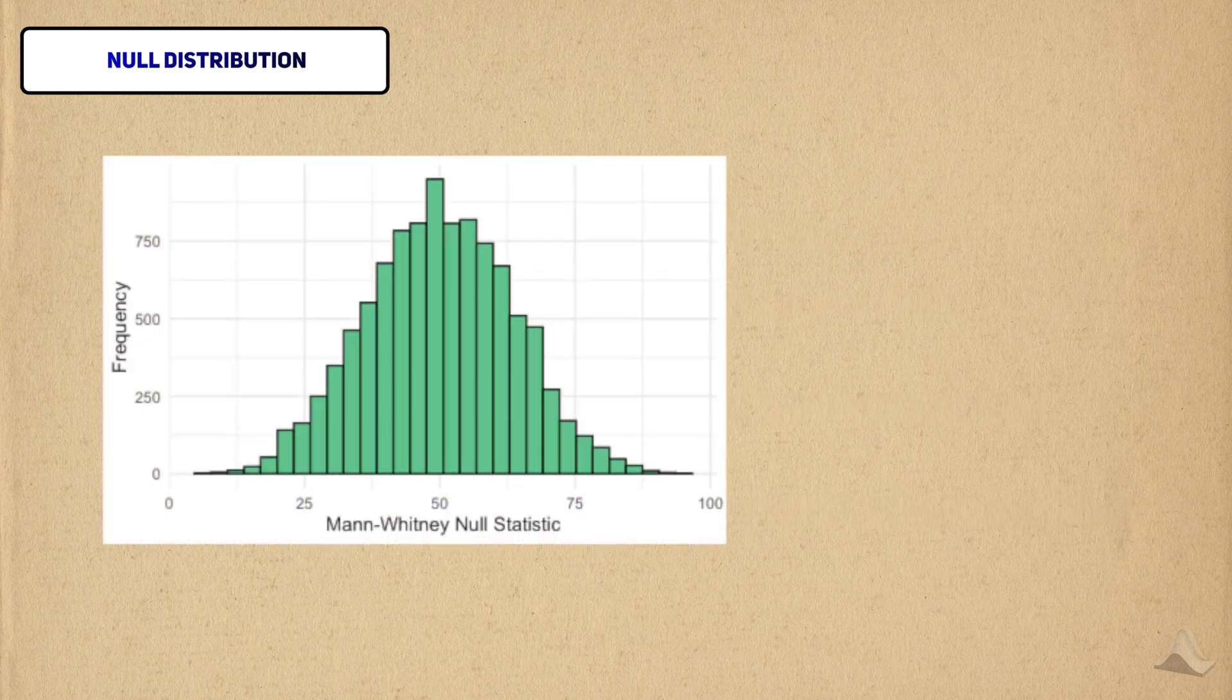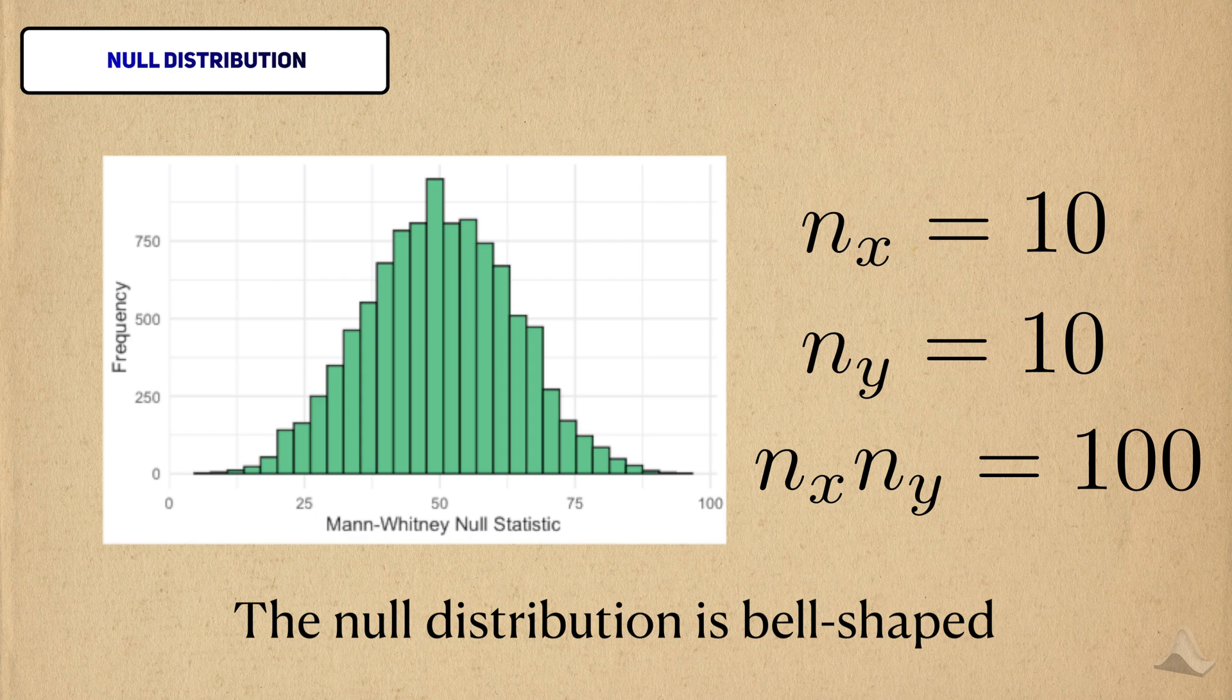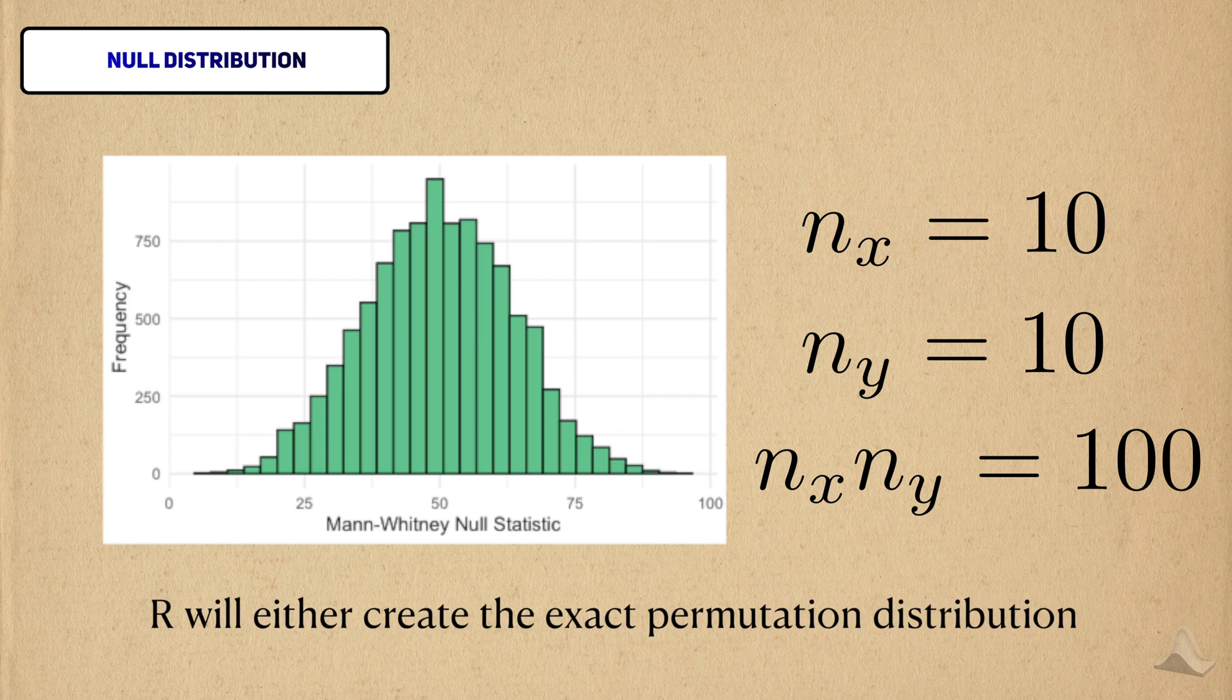You can see that, unsurprisingly, the null distribution has somewhat of a bell shape. This bell shape is centered on 50, which happens to be half the number of comparisons we need to make for two samples with 10 observations each. Depending on how much data we have, R will either calculate the exact permutation distribution, or use a normal approximation.